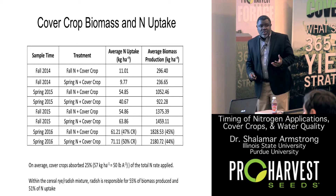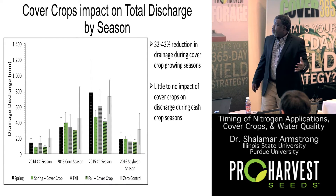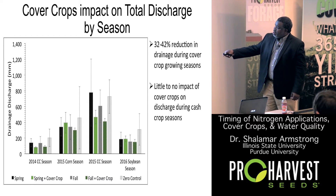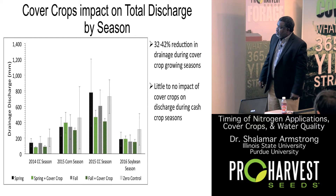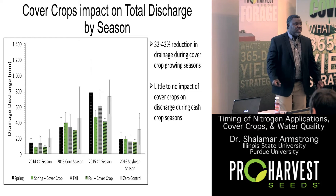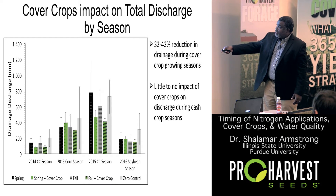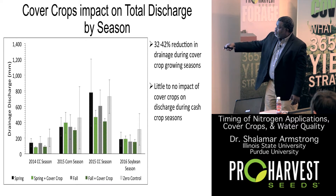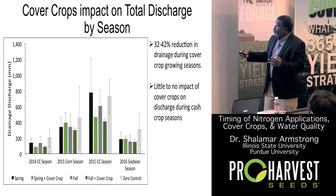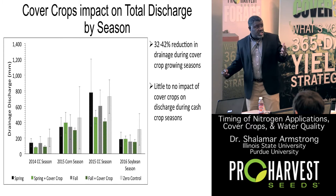Let's look at how the cover crop interacts with the volume of water that leaves the field through tile drainage, and when that impact occurs. What we have here is discharge in millimeters. On this x-axis, we have the 2014 cover crop growing season, 2015 corn season, 2015 cover crop season, and 2016 soybean season. When is the cover crop making its impact on the discharge of water leaving the system? When it's growing. The green bars are cover crop treatments. You see differences when growing, nothing in between. One question is how much of this reduction in water drainage is contributing to the reduction in nitrogen - could be huge.